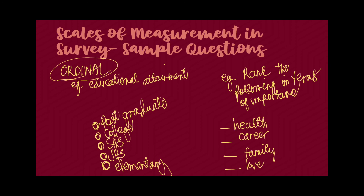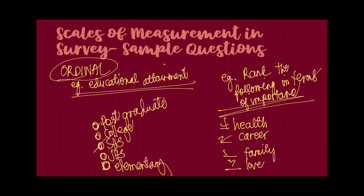For ordinal, an objective checklist on educational attainment — elementary, junior high school, senior high school, college, postgraduate — is a common example. You code them into numbers later. Another ordinal example is asking respondents to rank items by importance or preference, such as family, career, love, and health. These categories now have weights and rankings, hence they become ordinal.